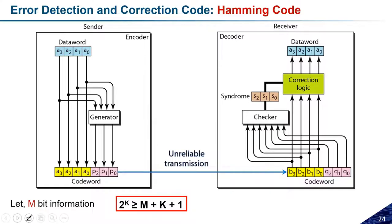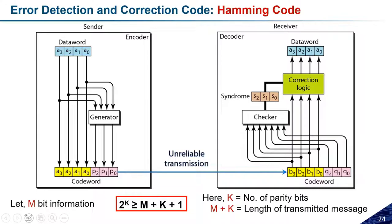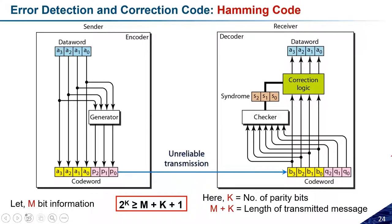Here k is the number of parity bits and m + k is the length of the transmitted message, because I have m-bit information and I need k parity bits. So the total transmitted message length will be m + k. Keeping this in mind, let us take some examples and try to solve some questions. If you have any questions about Hamming code you can ask; otherwise we can proceed to problem solving.